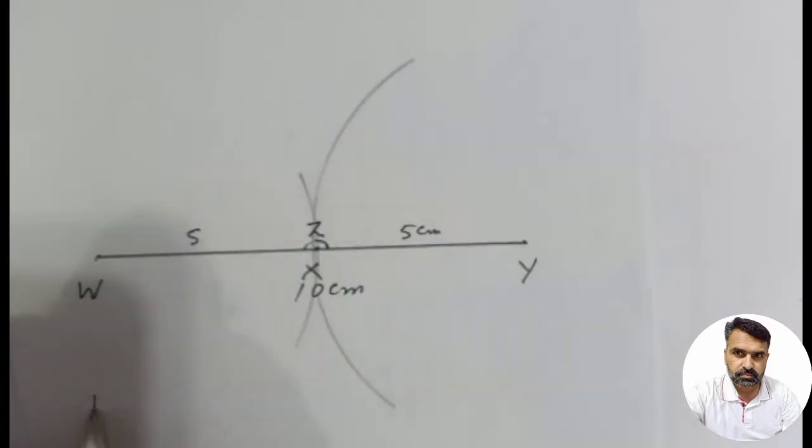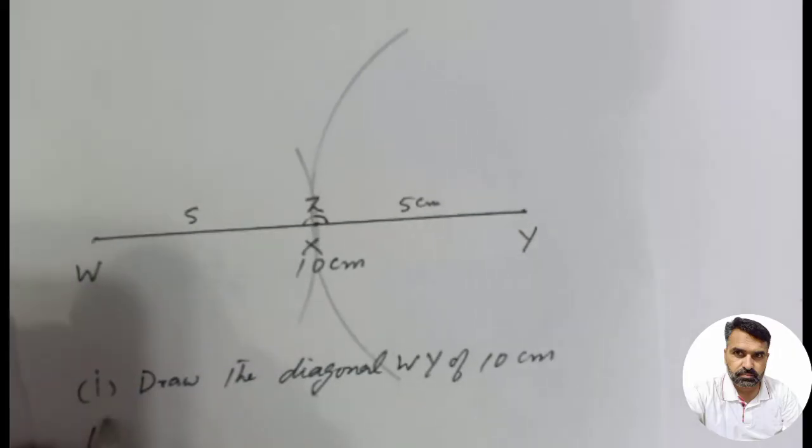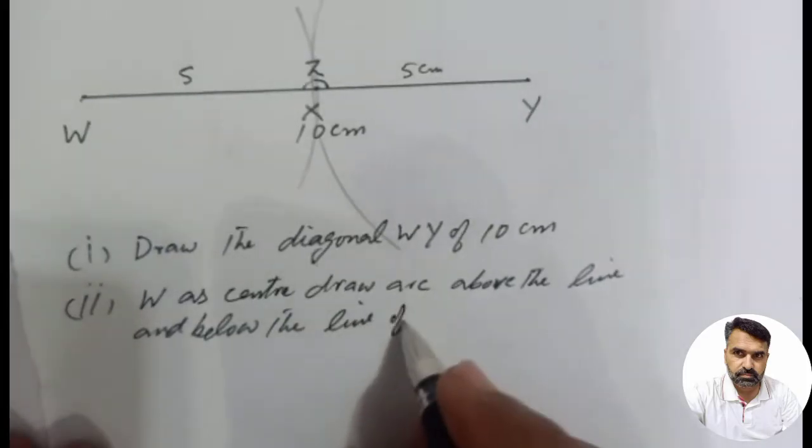I will write down the construction steps. Number 1: Draw the diagonal WY of 10 cm. Number 2: With W as center, draw arcs above the line and below the line of radius 5 cm.